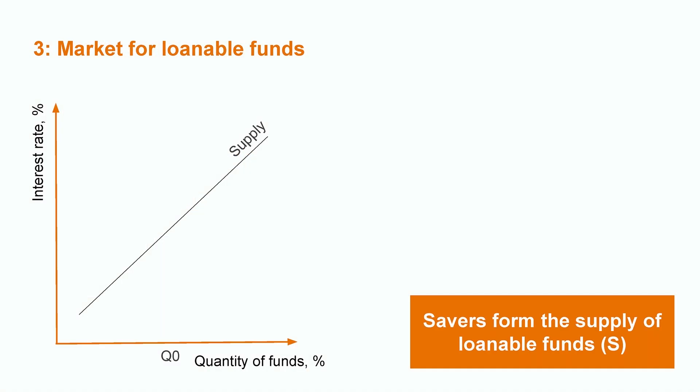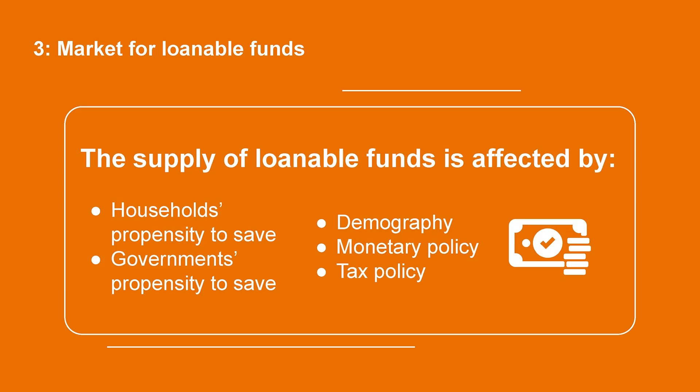But let us for a moment return to that bank deposit you made earlier. You and other households that had some income remaining after taxes and consumption bring your savings to the market. You form the supply of loanable funds. You earn interest on your savings, and the higher the interest rate, the more you are willing to save. So supply is, as usual, upward sloping.